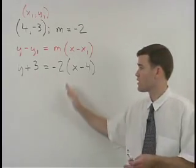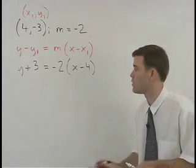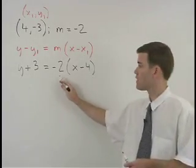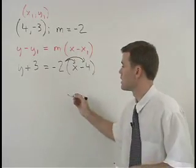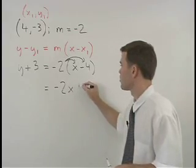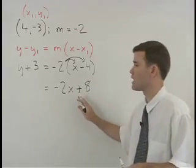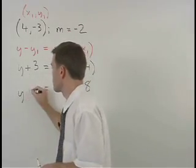Now we need to convert this equation to standard form. Our first step would be to distribute this negative 2 through the parentheses to get negative 2x plus 8 on the right side of the equation. On the left, bring down your y plus 3.